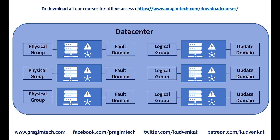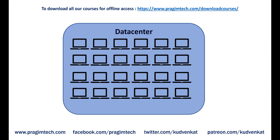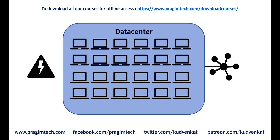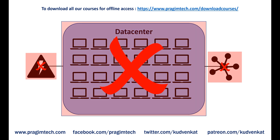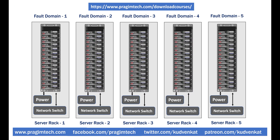Why is such a grouping required? To eliminate single point of failure. For example, let's say in a data center we have 100 servers and all these servers are connected by a single power supply and network switch. What if that single power supply or network switch fails? All the 100 servers will fail as well. So to eliminate such a single point of failure, each rack of servers has its own power supply and network switch.